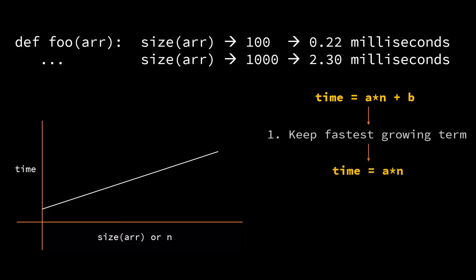So the first rule is we're only going to keep the fastest growing term. The b here is constant, so as the size of n grows, let's say n is 100 and a is 2, it will be 200. But when n becomes a million, when you multiply by 2 it becomes like 2 million, versus b remains constant. So the fastest growing term is a × n, so we only keep that.